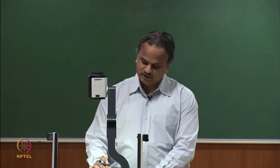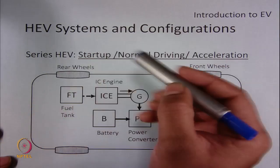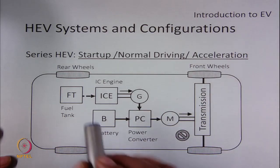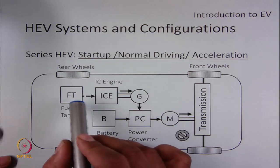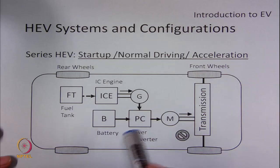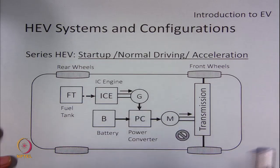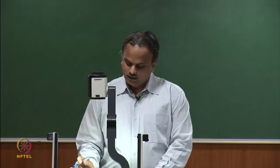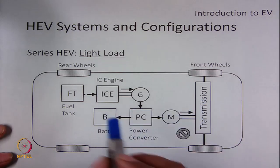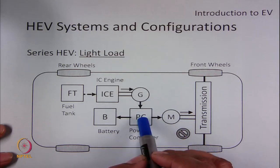Let us start with the discussion of series HEV configuration. When using the series HEV for starting the system and during normal driving and acceleration, the full system is active. Mechanical energy is transferred from the IC engine to the motor via the electrical generator, together with the energy stored in the battery to the electrical motor. During light load on the transmission system, part of that mechanical energy will be used to charge the battery.